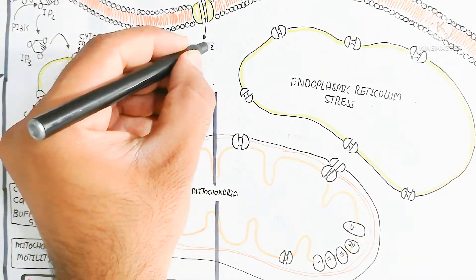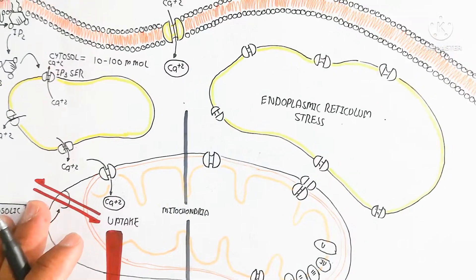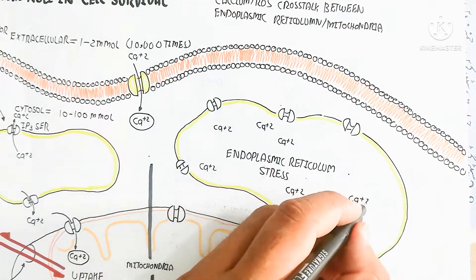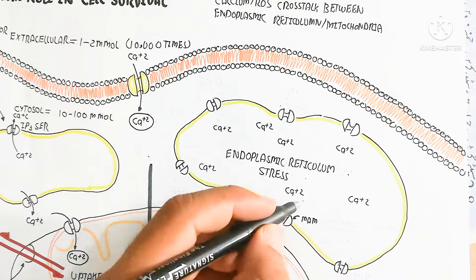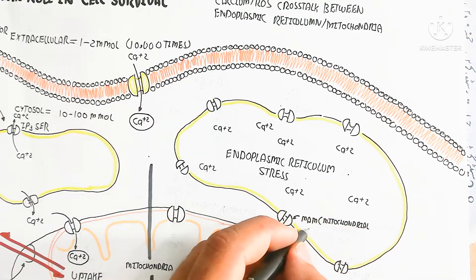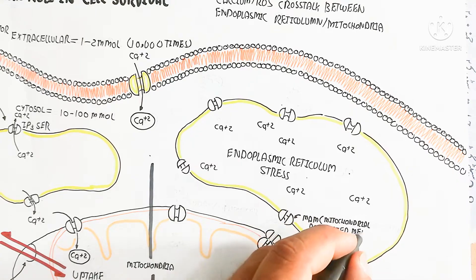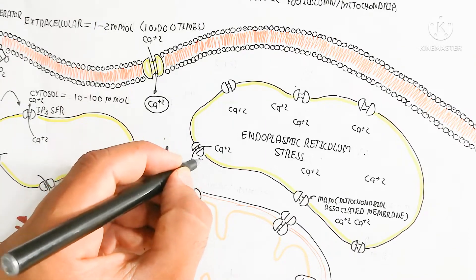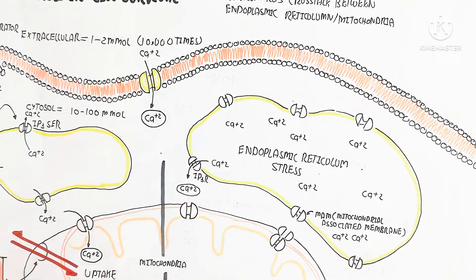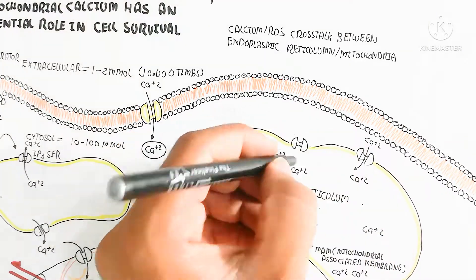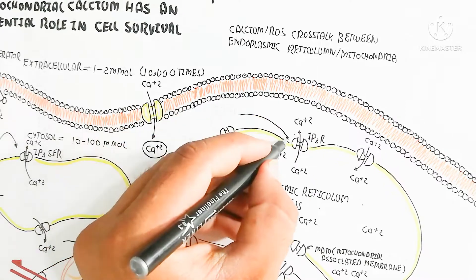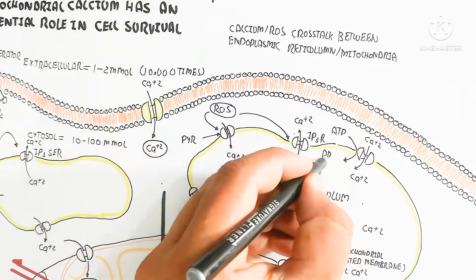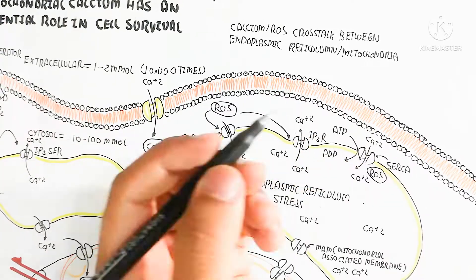Calcium influxes into the cell, and the calcium level increases. At the same time, reactive oxygen species are also produced due to cell damage. Here you can see the mitochondria-associated membrane channel, and the IP3 receptor — an IP3-sensitive channel — through which calcium can flow in. Reactive oxygen species lead to sensitivity of the channel, causing calcium entry and also efflux of calcium.